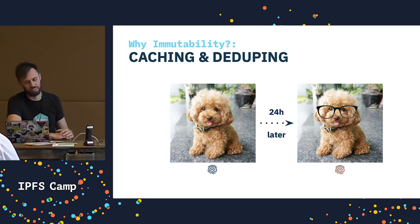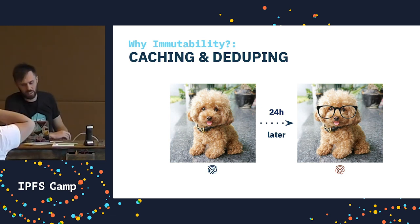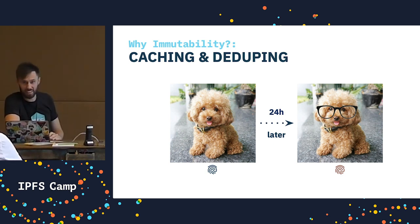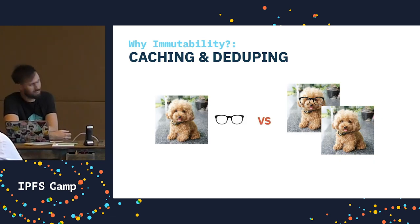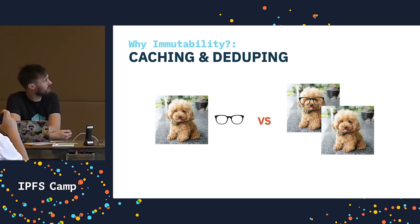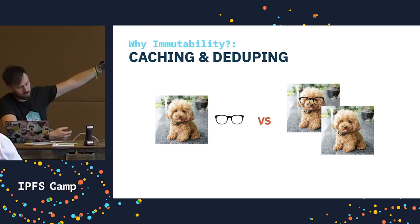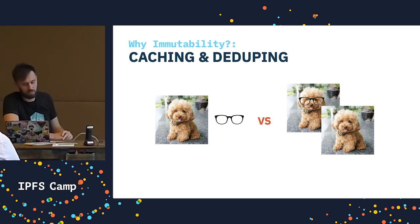If I change that poodle 24 hours later, the address also changes. But that's okay — it could be verified, cached, and fetched by anyone. What if I wanted to keep both files? Because the content is immutable, IPFS only really needs to store the changes. The two files actually share many of the same bytes, so if I have one of those files, the amount of data I have to transfer to fetch the other is really minimal.